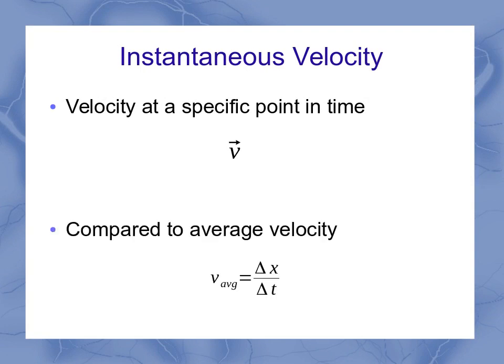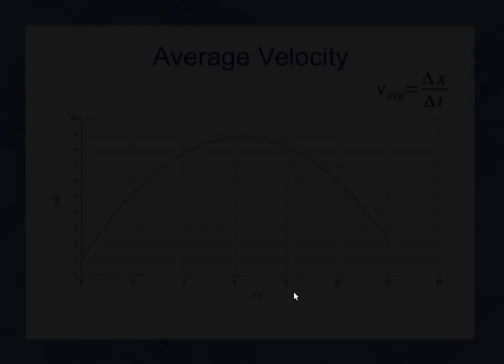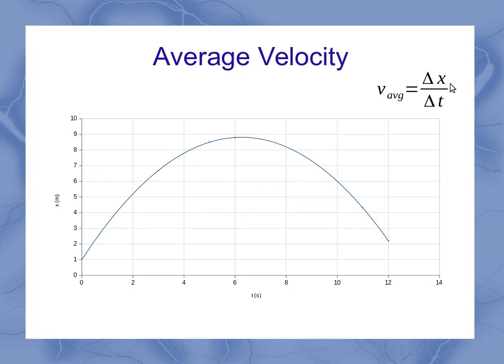We can compare this to the average velocity, where we were working with a time span. Graphically, when looking at the average velocity over a particular time span, I could connect two individual points, and the slope of that line defines both the time span and the displacement, giving us our average velocity.